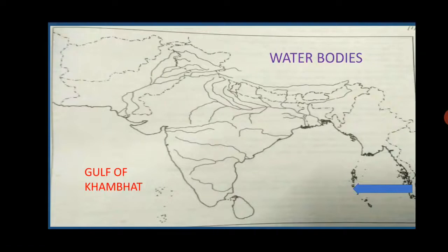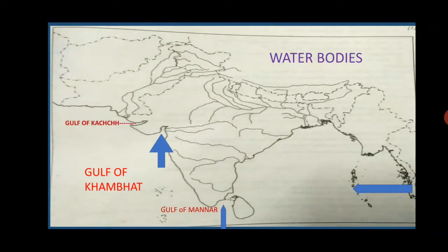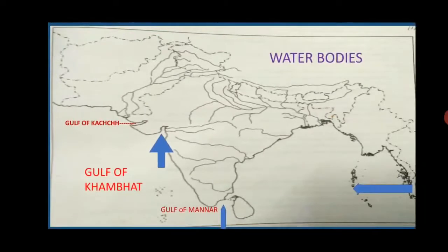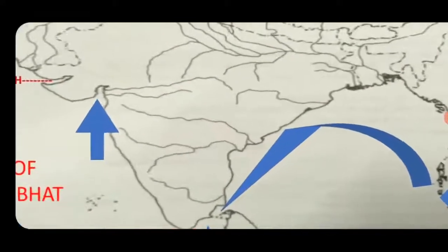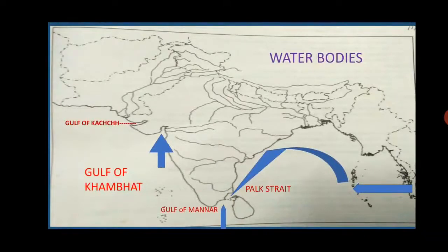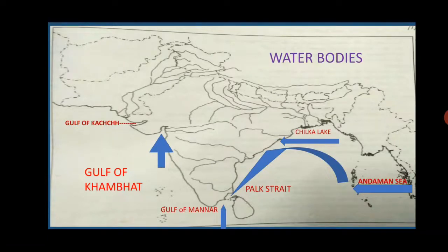Next is water bodies. This area is showing the Gulf of Mannar. The arrow indicating inside is the Gulf of Khambat. Then the Gulf of Kutch. Pointing in between Sri Lanka and India is the Palk Strait. Then here, the arrow pointing towards the coast of Odisha is Chilka Lake. This area is the Andaman Sea. You have to put an arrow towards that water body and mark the place.